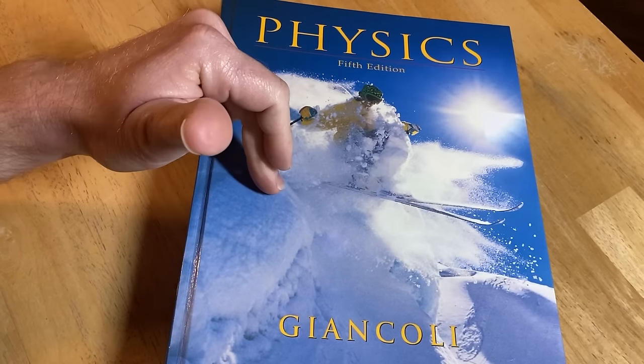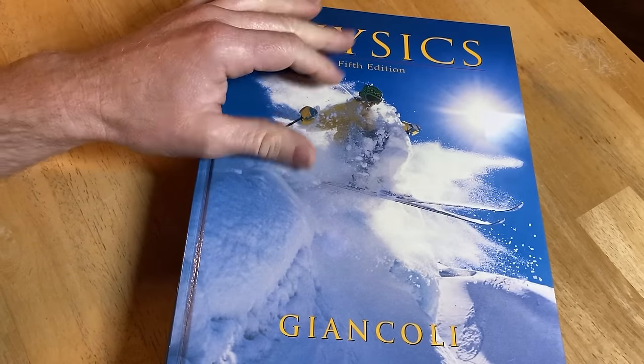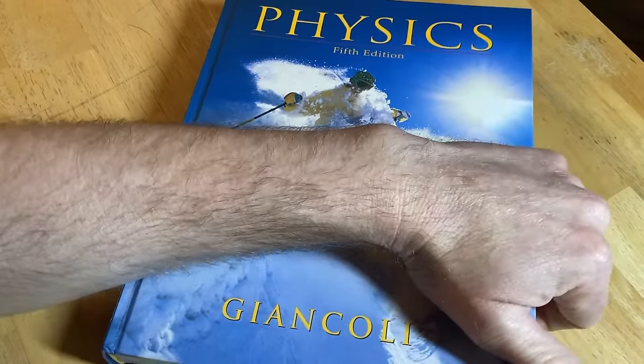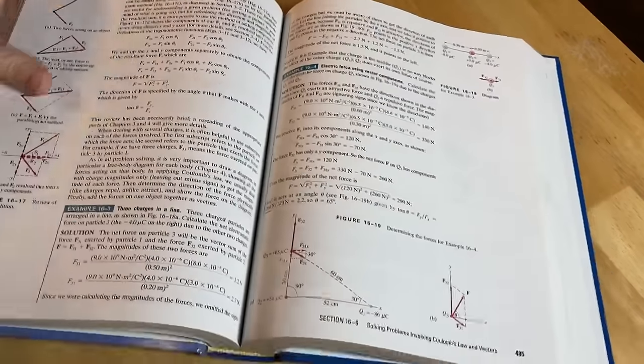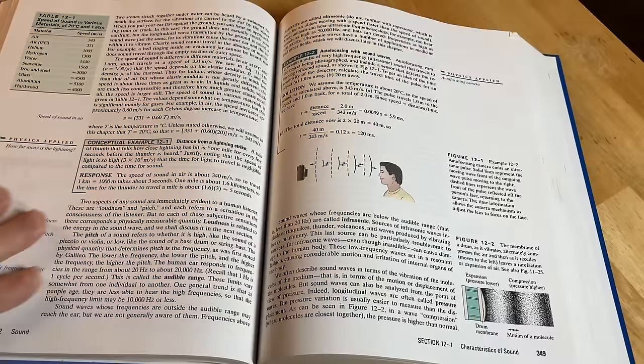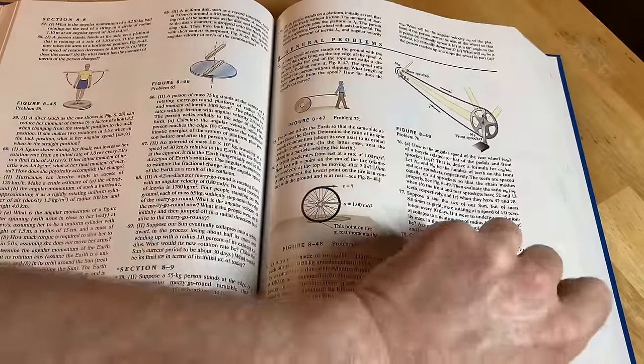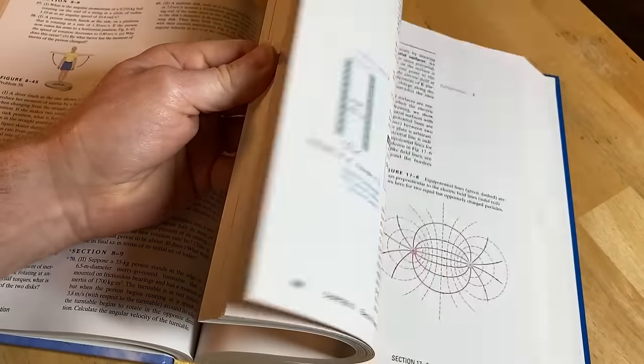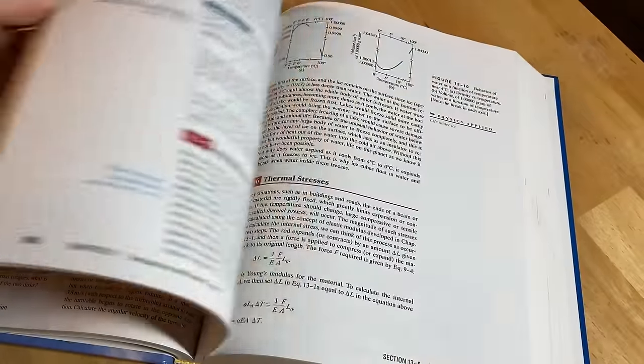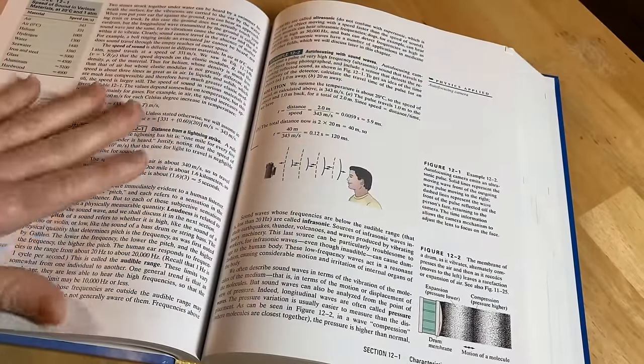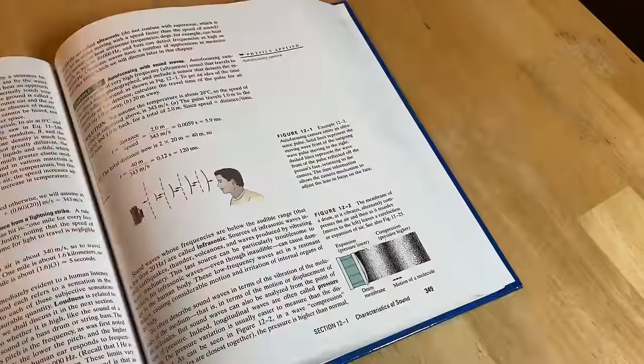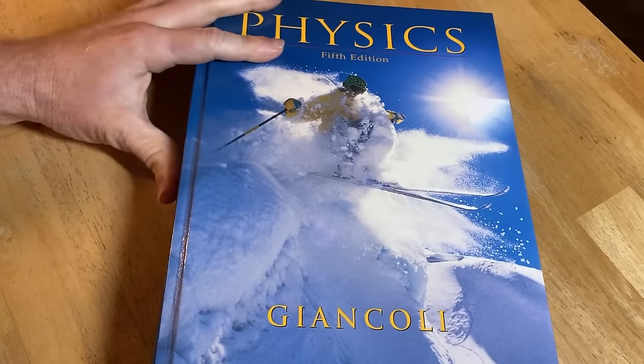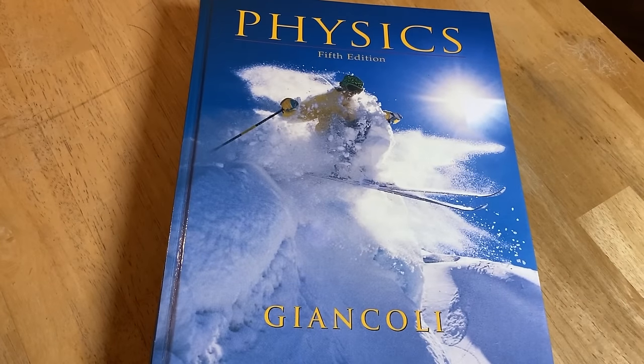And I'll leave a link in the description to this book in case you want to check it out. And if you take anything away from this video, it should be that this is a good book on physics. It's got a lot of examples, it's modern in the way it's written, it has answers to all the odd numbered problems. I think it's an excellent choice for someone who wants to self-study physics or complement their physics course with an extra book. It's just a great book to have in your collection. It's Physics by Giancoli. Good luck, take care, keep doing mathematics.